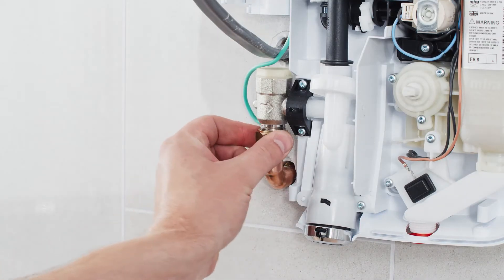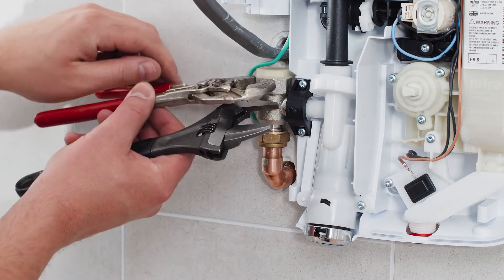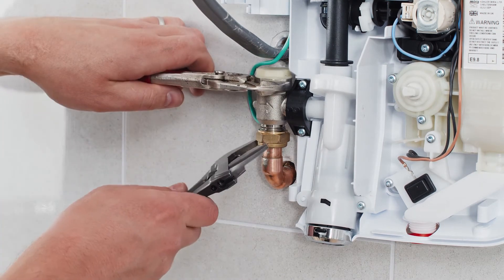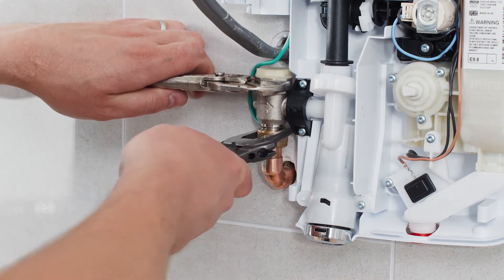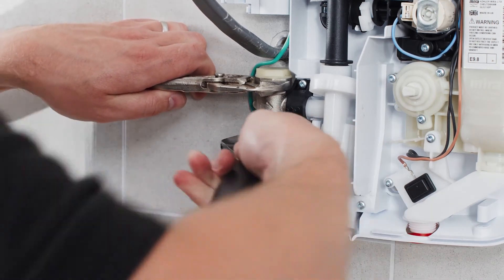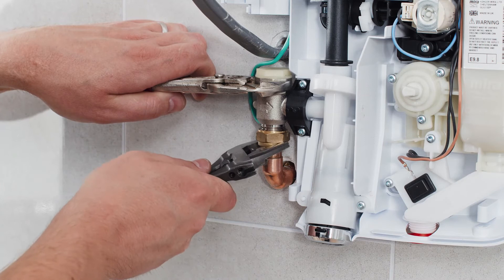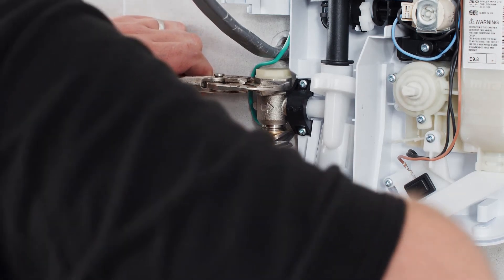The final connection to the water supply can then be made, taking care to support the filter housing with an additional pair of water pump pliers as the fitting is tightened. This prevents any pressure being exerted on the plastic shower case or the flow valve assemblies.